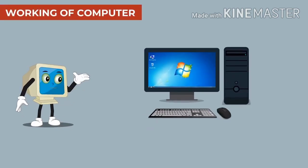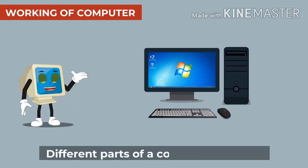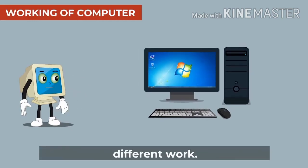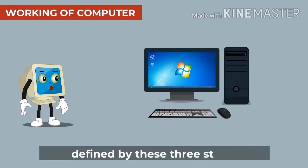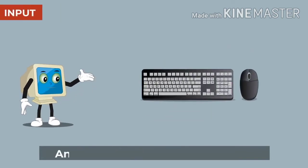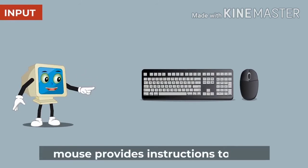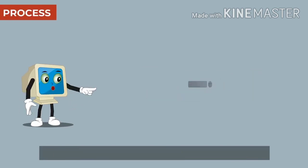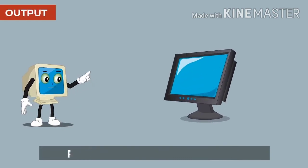Working of Computer. Let's discuss the working of the computer. Different parts of a computer perform different work. The working of a computer can be defined by these three steps. Input: an input device like keyboard and mouse provides instructions to the computer. Process: it is then processed by CPU. Output: finally, the output is displayed on the monitor.